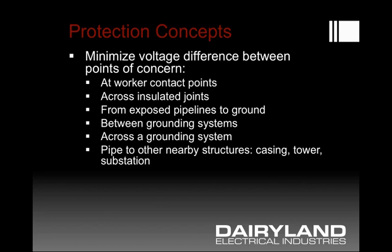There could also be differences between the pipe voltage and other structures nearby. It could be the casing that it goes through at a road crossing, it could be a transmission tower, a substation, or any other foreign structure. If voltage can exist between two points, then that could reach perhaps unsafe levels and needs to be addressed.